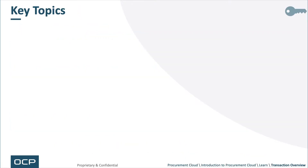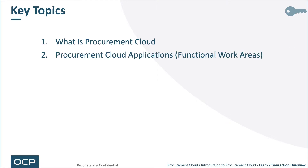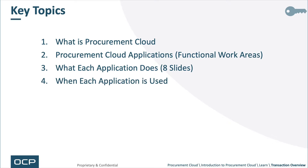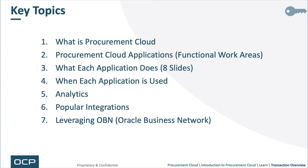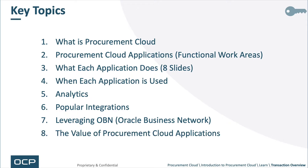Key topics are as follows: What is Procurement Cloud? Procurement Cloud Applications, also known as functional work areas. What each application does — there are about eight slides walking through each one. When each application is used. Analytics — two slides for analytics. Popular integrations. Leveraging OBN, which is also known as the Oracle Business Network. And finally, the value of Procurement Cloud applications.